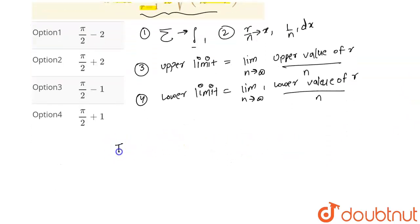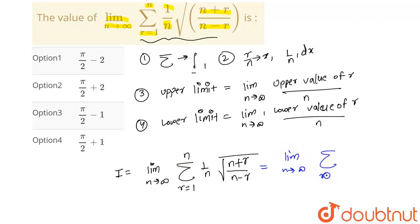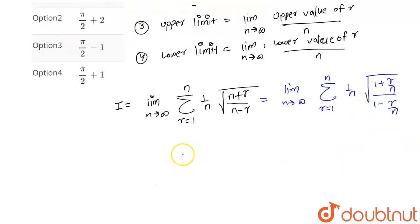Let's call our expression I, equal to limit n tends to infinity, summation of (1/n) times the square root of (n+r)/(n-r), where r goes from 1 to n. Taking n common in the numerator and denominator under the root, we get 1 plus r/n divided by 1 minus r/n.